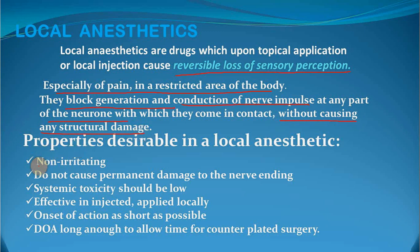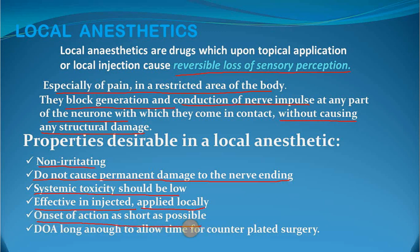Properties desirable in a local anesthetic: it should be non-irritating, it does not cause permanent damage to the nerve endings, systemic toxicity should be low, effective when injected as well as locally applied, onset of action as slow as possible, and duration of action long enough to allow time for the contemplated surgery.